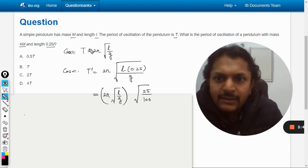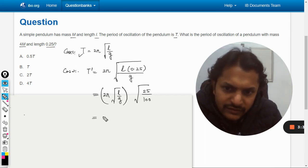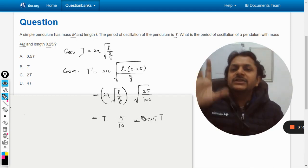This can be directly substituted as capital T from here, so it will be capital T. And the square root of this will be 5 divided by 10, that is 0.5. So this is equal to 0.5 capital T.